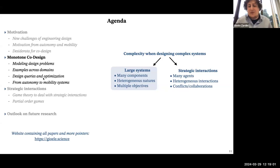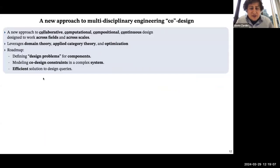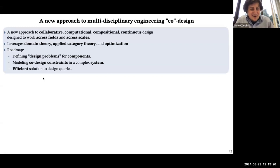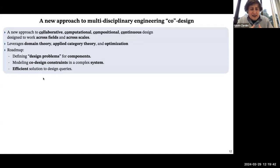The first part of the talk covers the first challenge. Here, co-design stands for collaborative, computational, compositional, and continuous design. The tool leverages domain theory, applied category theory, and optimization. In the next few slides, I want to make clear what I mean by design problems, how I define constraints between different components and their interconnections, and how to efficiently solve these problems.